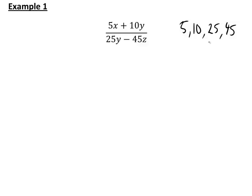So that means we can take the number 5 out as a common factor on both the numerator and the denominator. Taking 5 out as a common factor on the numerator: 5x is 5 times x, and 10y is 5 times 2y, so the numerator becomes 5(x + 2y).